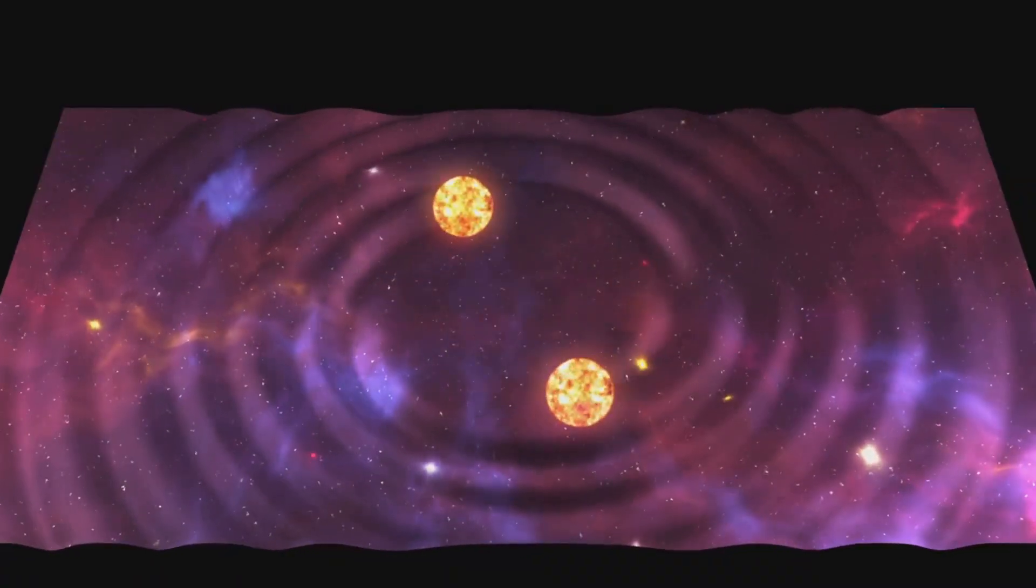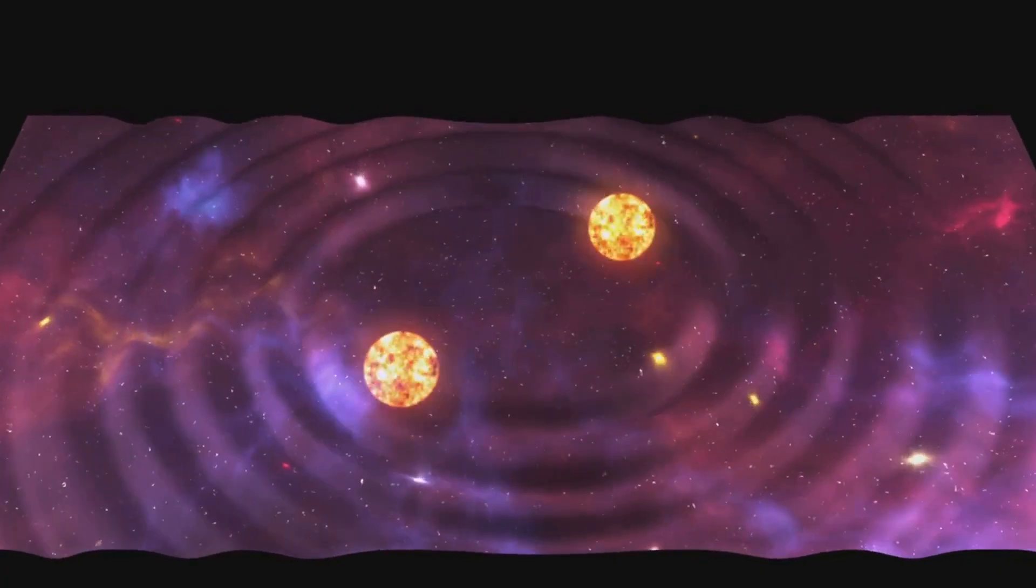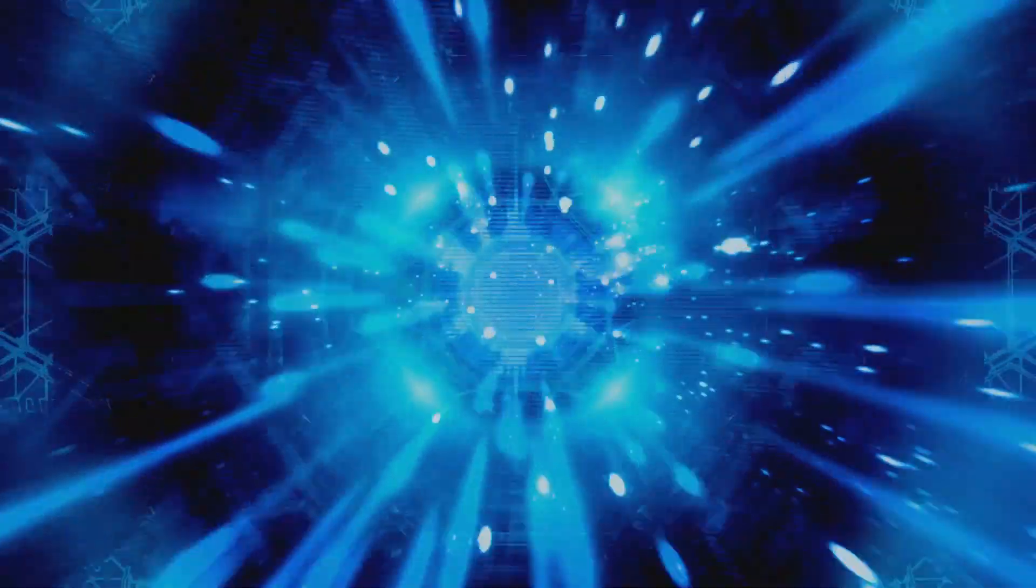These neutron stars, only a few miles across but as heavy as our Sun, can spin hundreds of times per second without shattering. The strong gravity holds them together. These dense, spinning objects, they realized, were making the mysterious pulses.